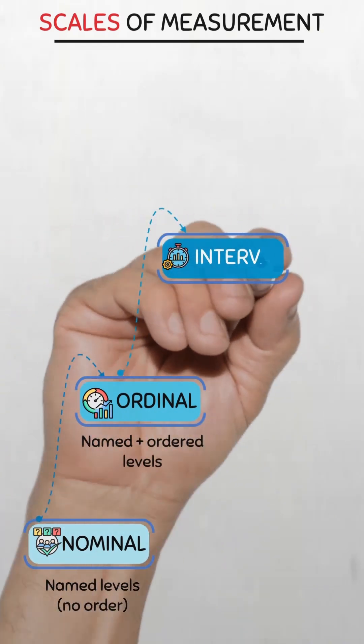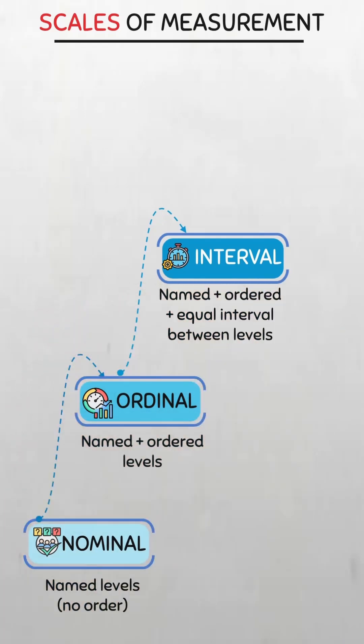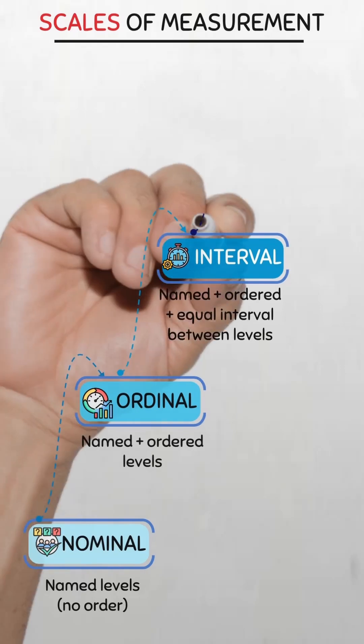Then there's interval. This is named, ordered, and has equal intervals between levels. Think temperature in Celsius. The difference between 20 and 30 degrees is the same as 30 and 40 degrees, but zero doesn't mean no temperature. So the interval scale has no true zero point. That's the defining feature.